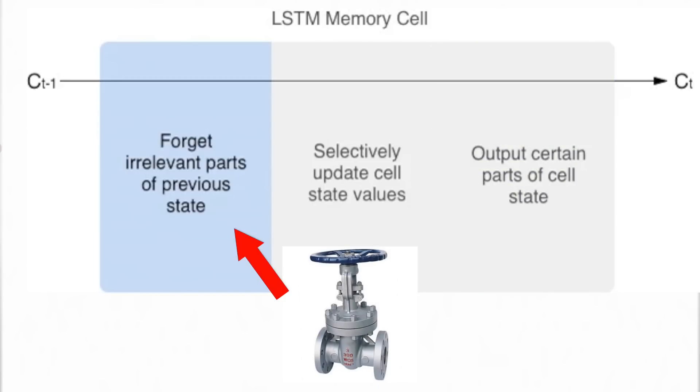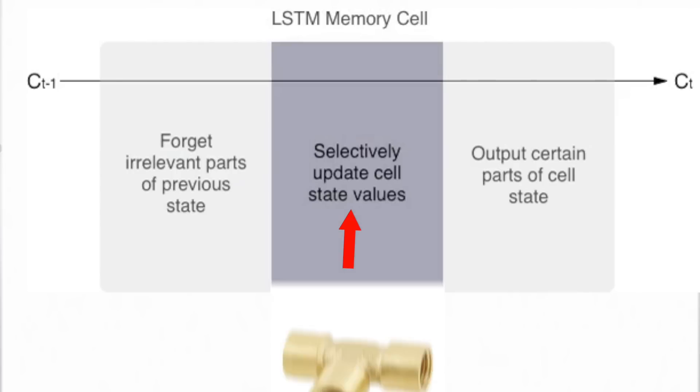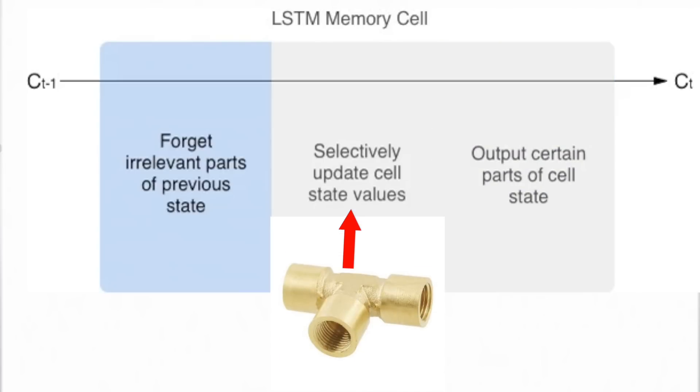If we keep it open, all old memory will pass through. The other is the new memory valve. New memory comes in through a T-shaped joint, and merges with the old memory, and the amount of new memory that comes in is controlled by this valve.